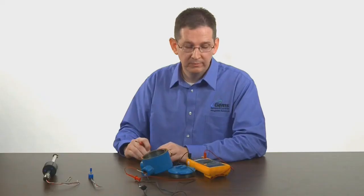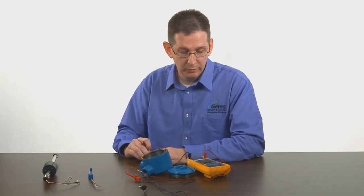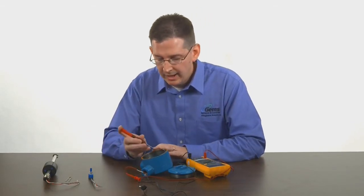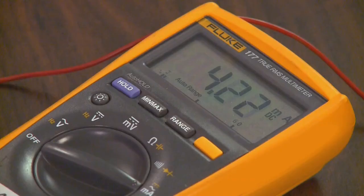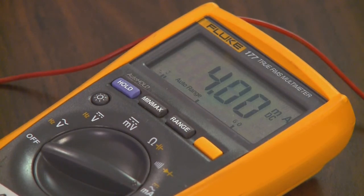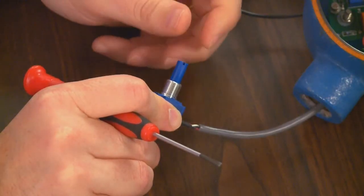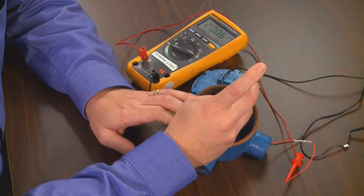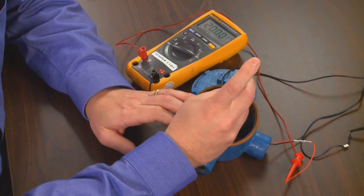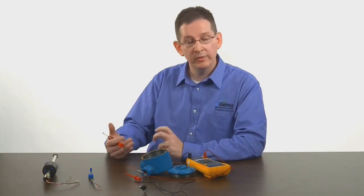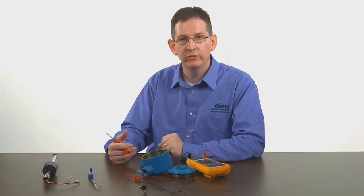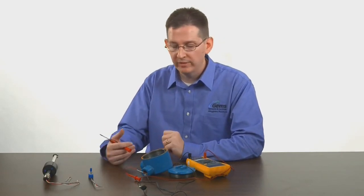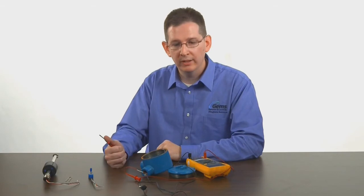Once that's done, we take the potentiometer fully counterclockwise and do the null potentiometer. Now these do affect each other, so what we want to do is this two or three times total. If we bring the potentiometer fully clockwise, you'll notice that the output has actually changed and we tweak that back towards the 20 milliamp point. As I said, doing that two or three times will pull that into your 4 and 20 points. Once you're done, your unit is fully calibrated.